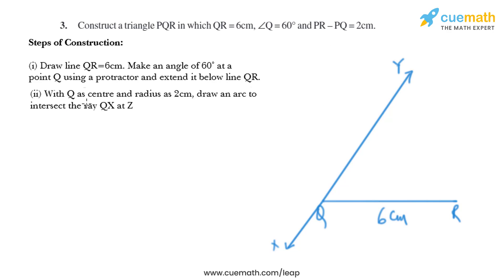In the next step, with Q as center and radius 2 cm, draw an arc to intersect the ray QX at Z. Now I'll put the compass at Q, measure the opening as 2 cm, and draw an arc like this that intersects QX at Z.